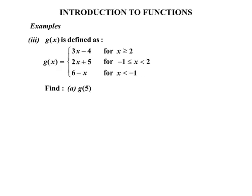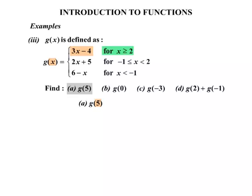So we're asked to find a) g of 5, b) g of 0, c) g of -3, and finally d) g of 2 + g of -1. Now let's do part a firstly, g of 5. So look at the x. The x has been replaced with 5. So of those you can see that we're choosing an x value which is certainly greater than 2. So we're going to use the first rule. I'll call that the first rule, the one underneath the second and the bottom one the third. So we're going to use that first rule there and we're going to replace the x with 5. So we do that. We get 3 times 5 - 4 works out to be 11.